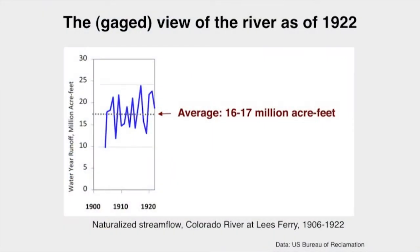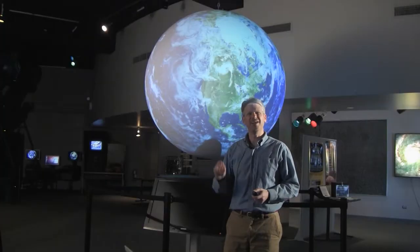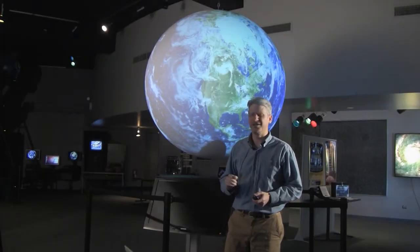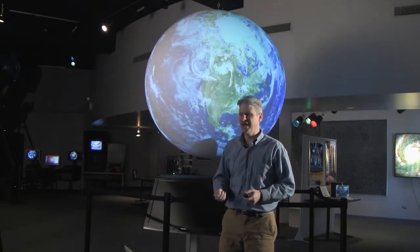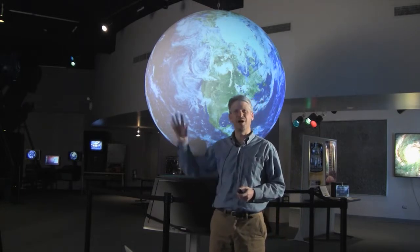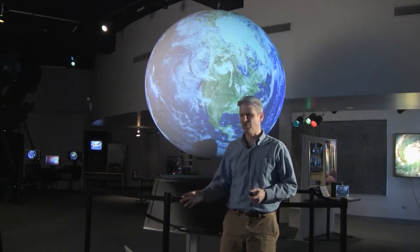An average of 16 to 17 million acre feet, with drought years down to about 10 million acre feet, and wet years well over 20 million acre feet. It was based on this understanding that the Colorado River Compact was negotiated in 1922, and the river's flow divided between the upper basin states and the lower basin states.